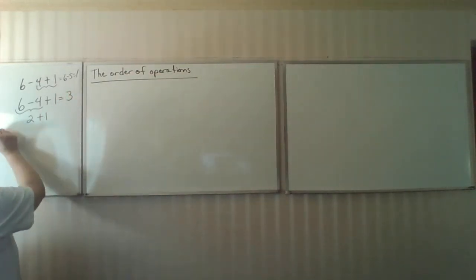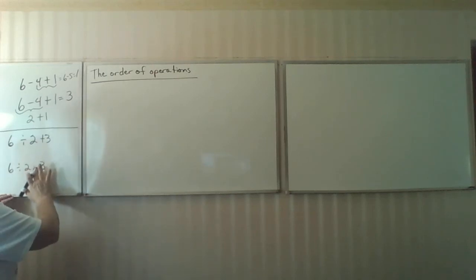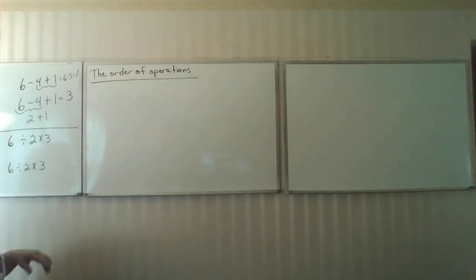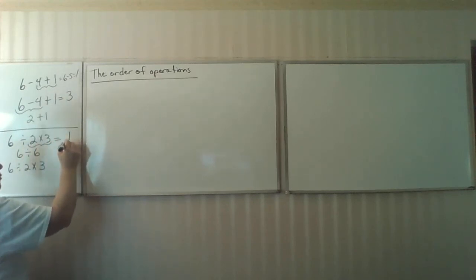Here's another example of the same thing. 6 divided by 2 times 3. One student may say, I've always heard you multiply first. So I'm going to multiply 2 times 3, and I'm going to end up with 6 divided by 6, which equals the number 1.